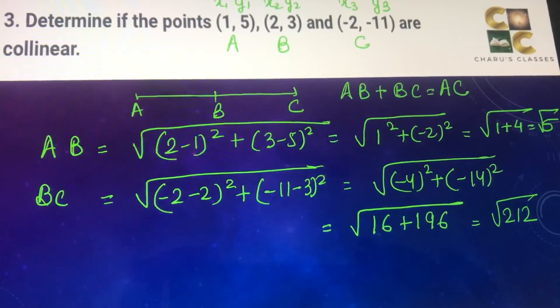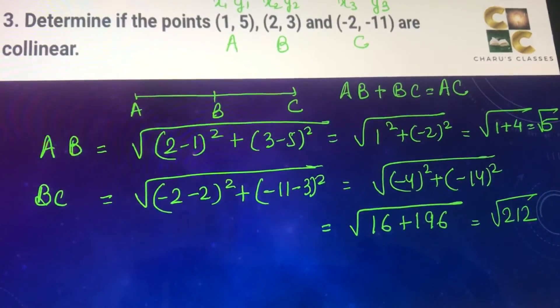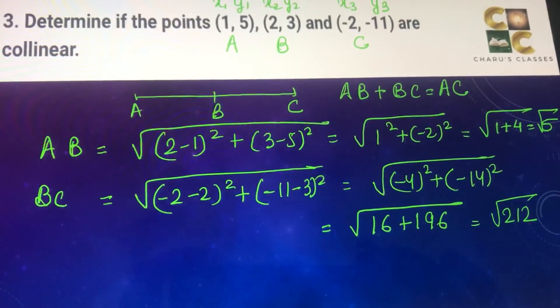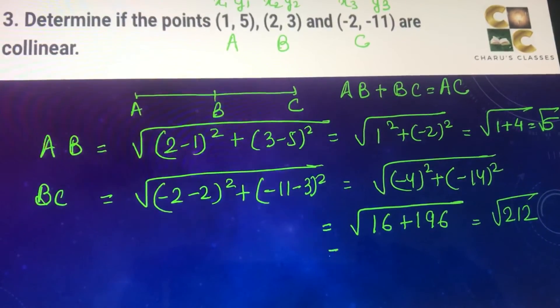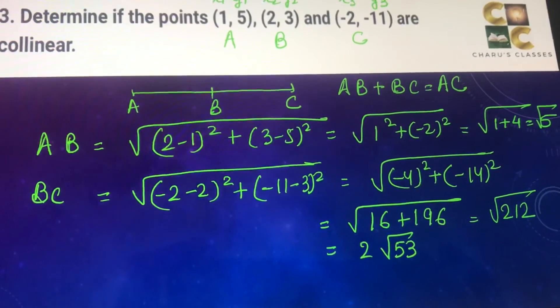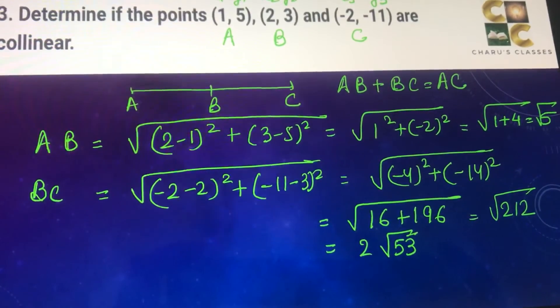If we make factors of 212, you will get 4 into 53, out of which square root of 4 is 2. So 2 can come out. This is 2 root 53.